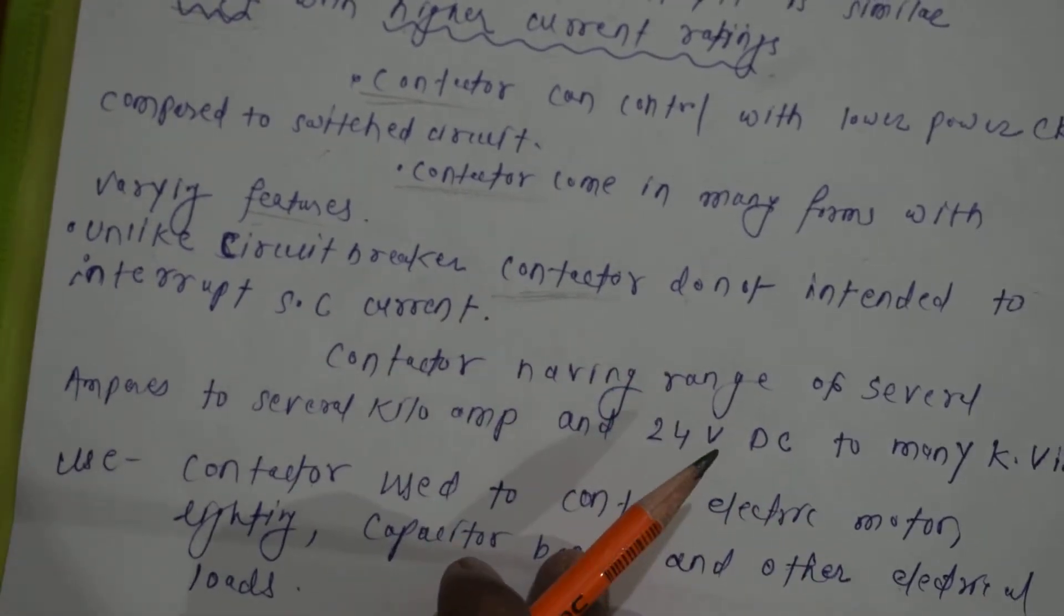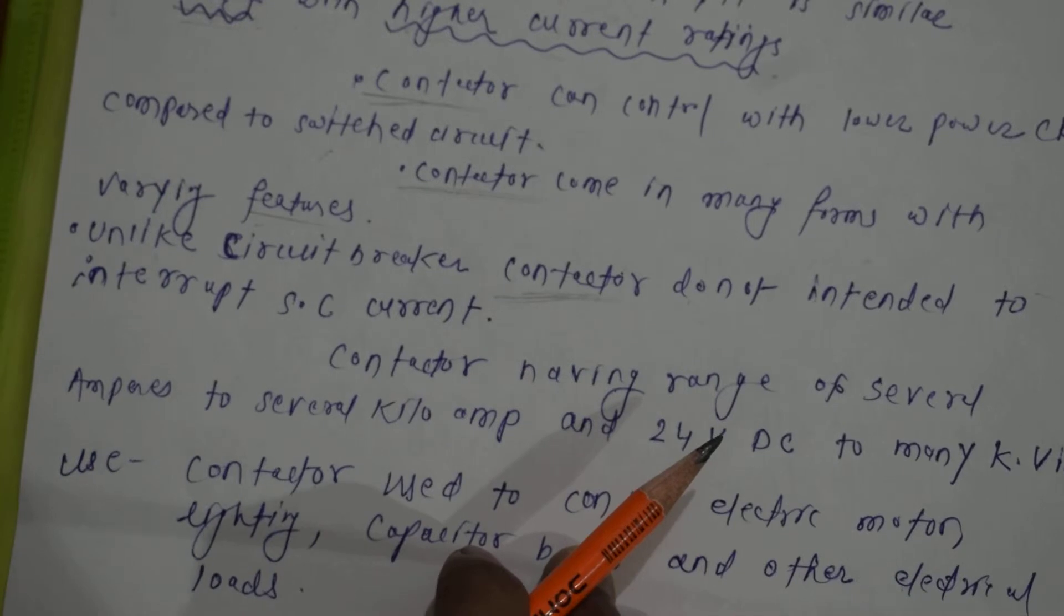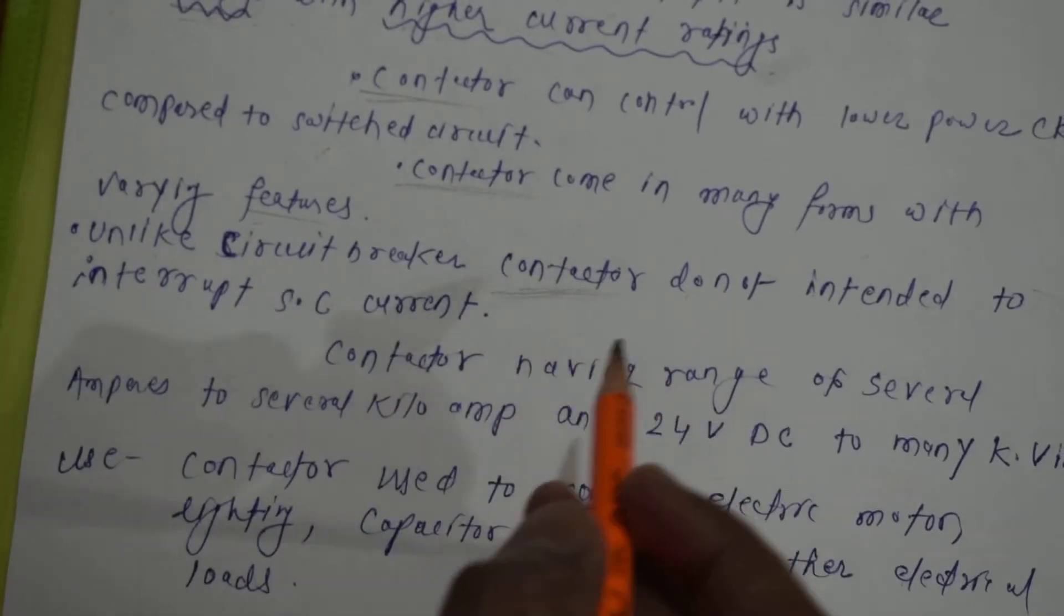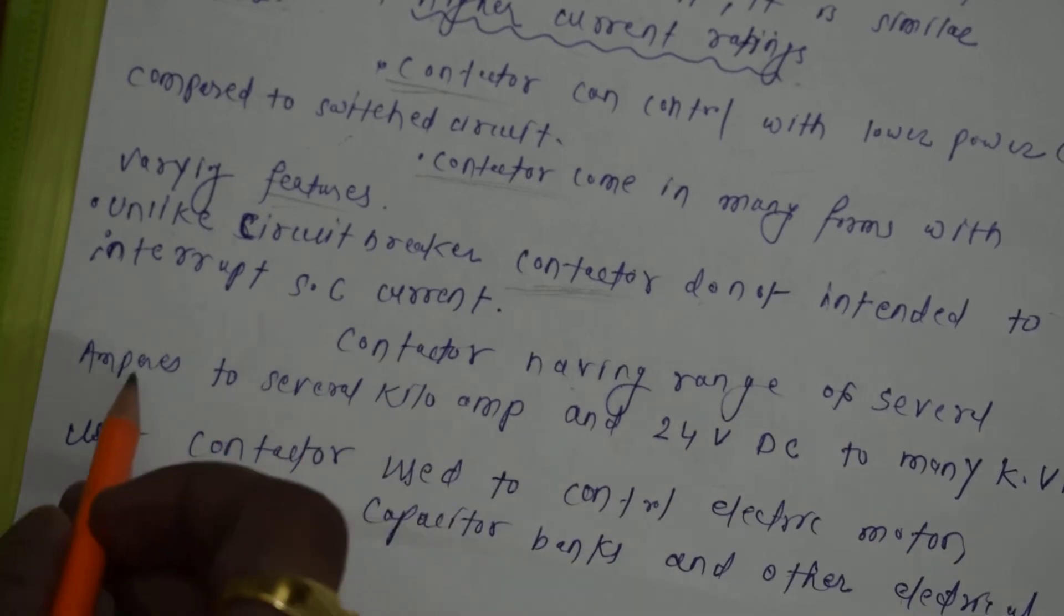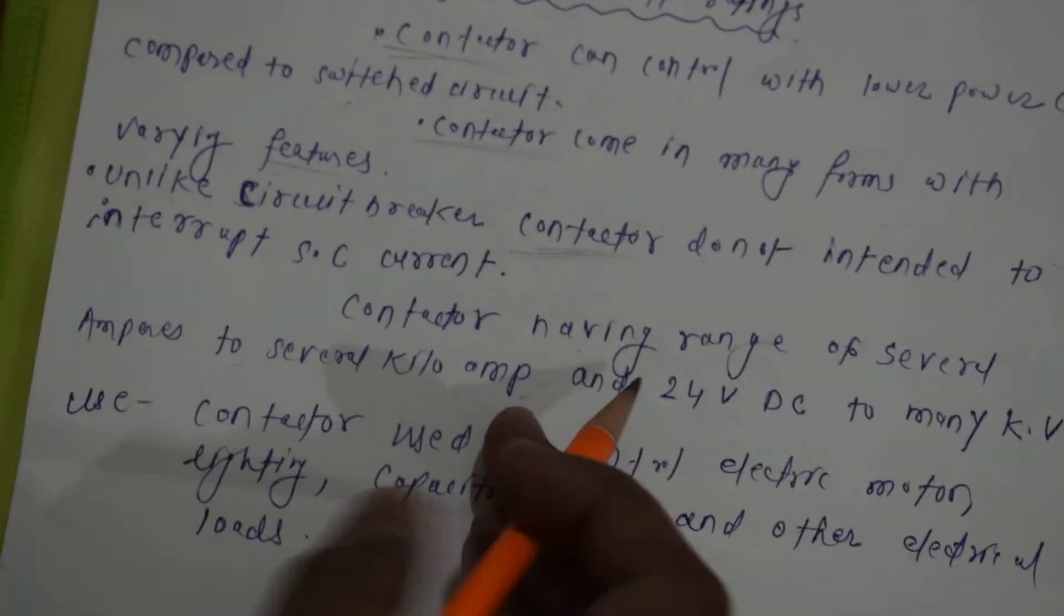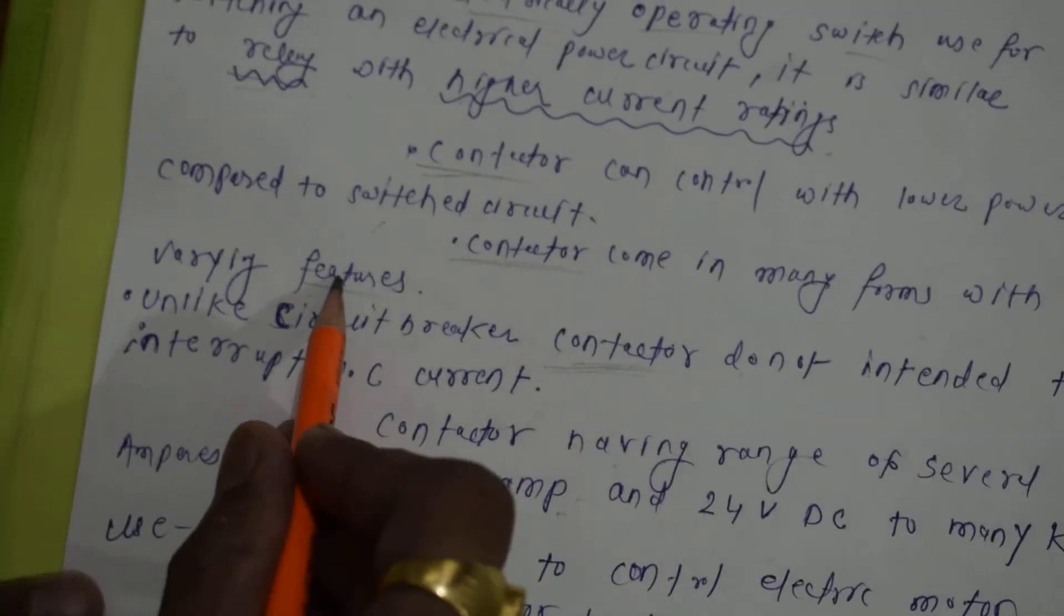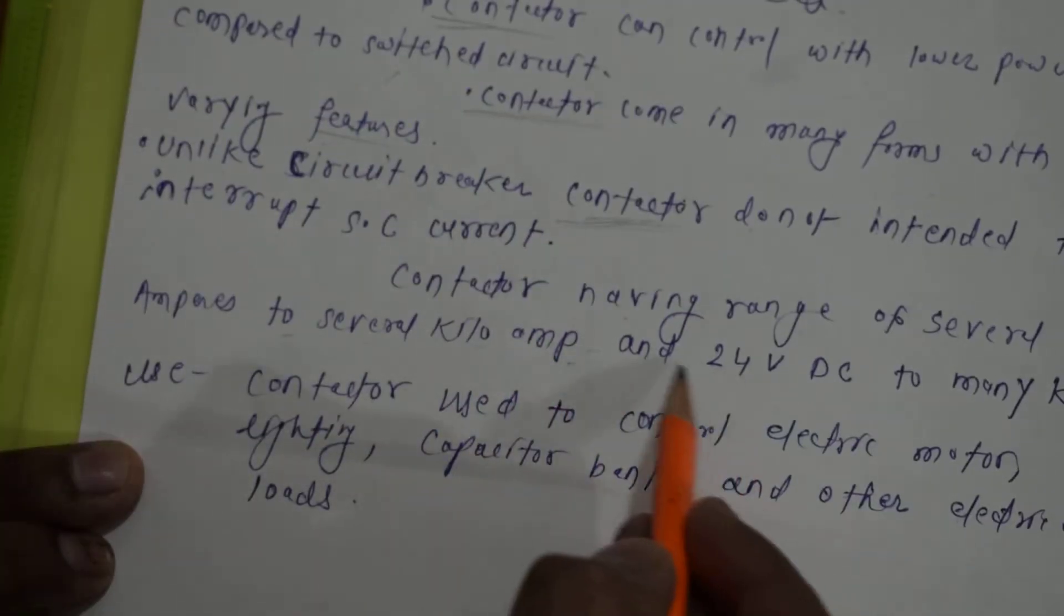Contactor cannot interrupt short circuit current. We cannot use it for safety, we can use it for switching purpose. Contactors have a range of several amperes to several kiloamperes.